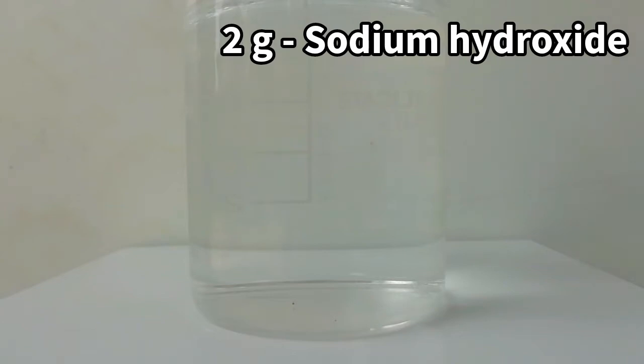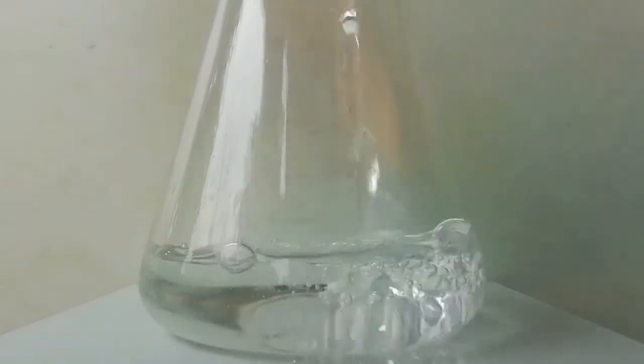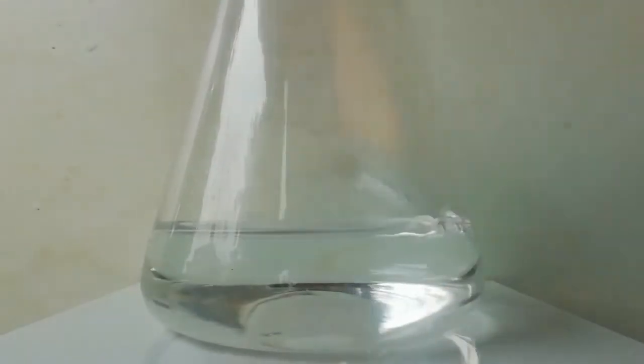First, 2 grams of sodium hydroxide is dissolved in 100 milliliters of distilled water and added to a 250 milliliter conical flask.